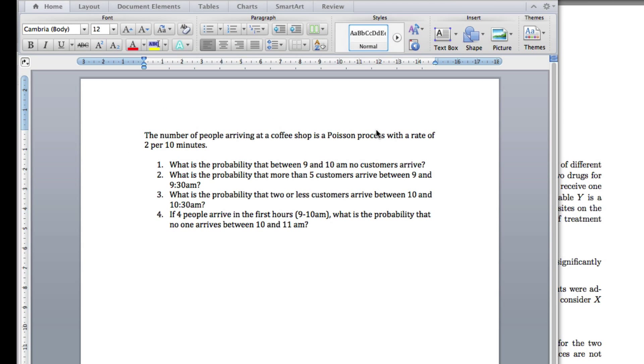Okay, so this time we're going to look at Poisson Processes, which is a good example of the Poisson distribution. Here's my question: The number of people arriving at a coffee shop is a Poisson process with a rate of 2 per 10 minutes. What is the probability between 9 and 10 a.m. no customers arrive?